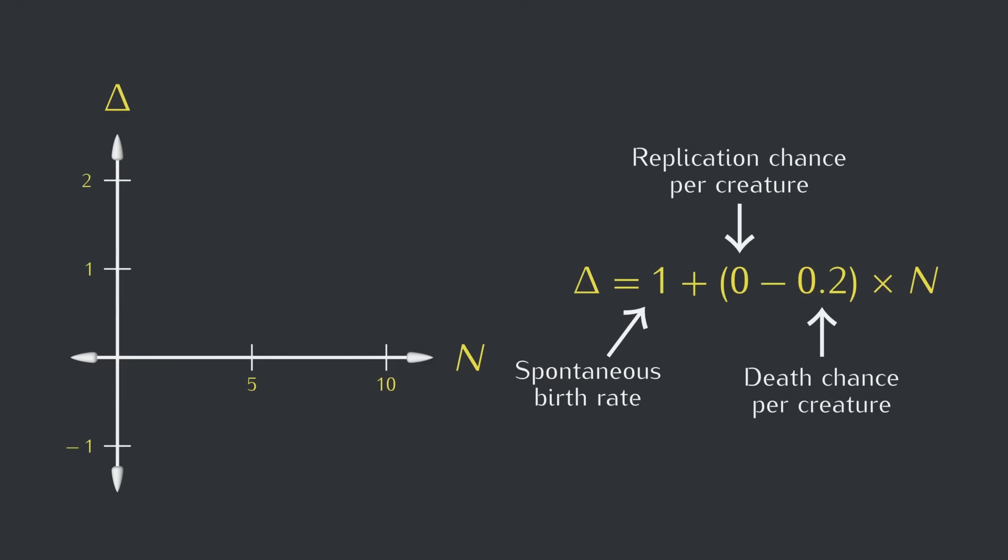Alright, now we get that satisfying feeling of plotting all the points and making a curve. When we have 0 creatures, the expected change is equal to the spontaneous birth rate, and as N increases, the expected change decreases by 0.2 per creature.